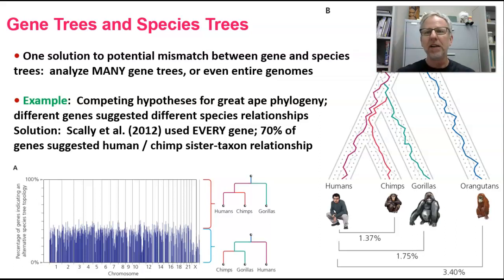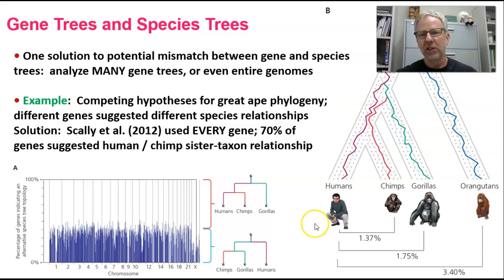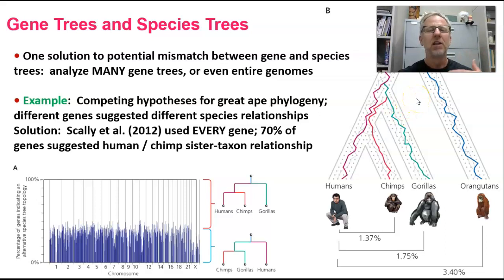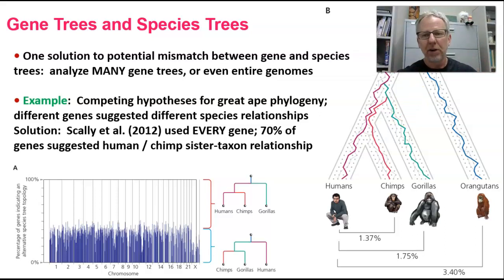If you look at figure B, you can see how one particular gene tree would actually show that chimps and gorillas are each other's closest relatives because of how those alleles coalesce. But by looking at whole genomes or many genes, the overall patterns of how species are related become better focused.